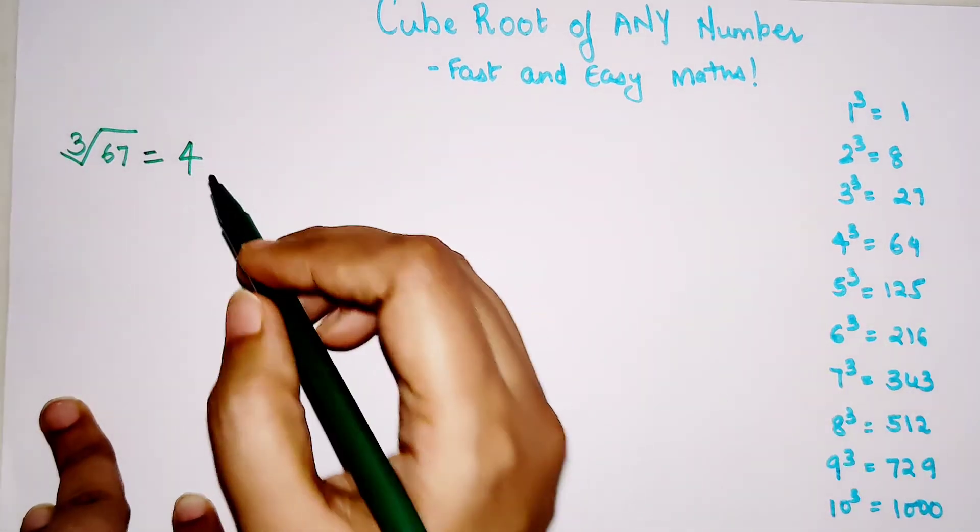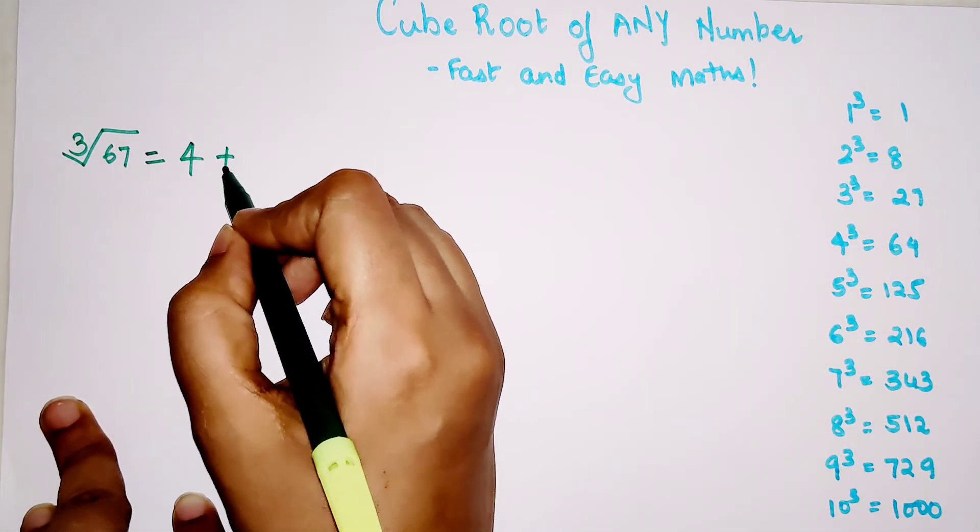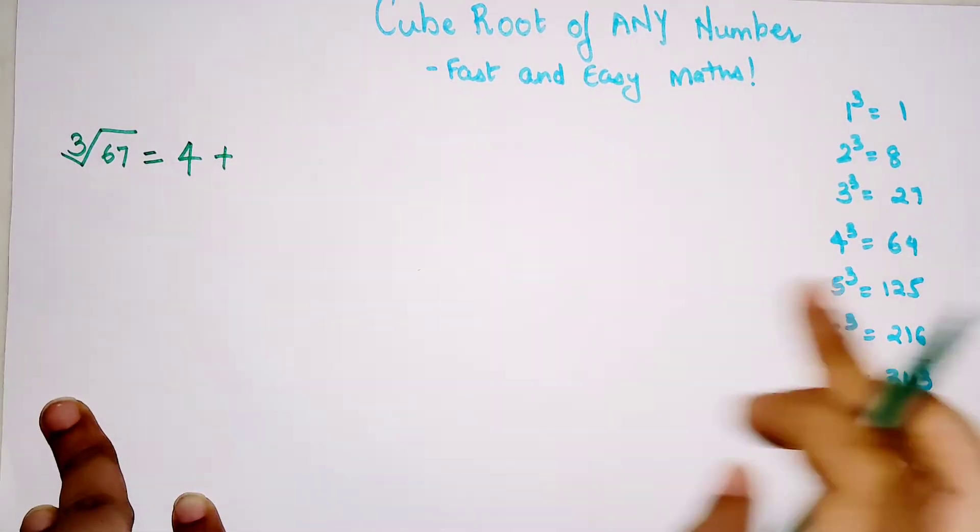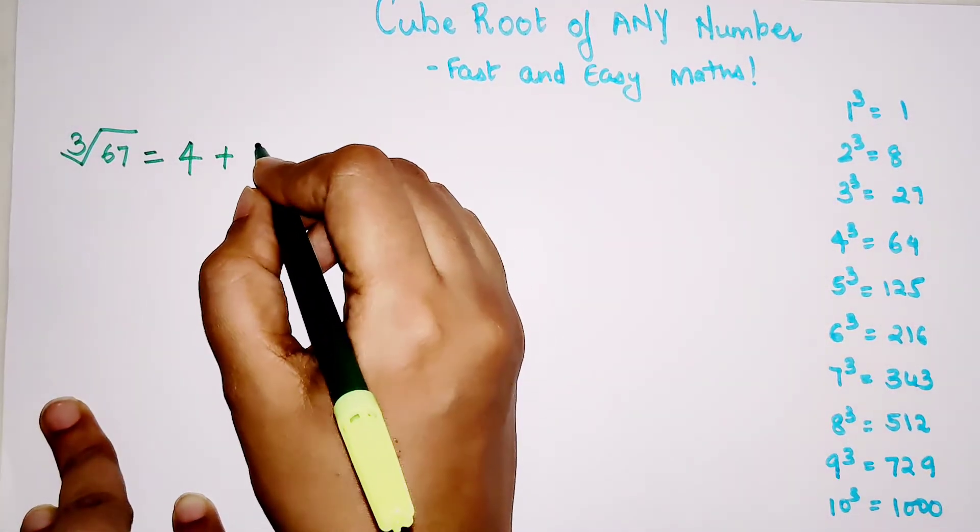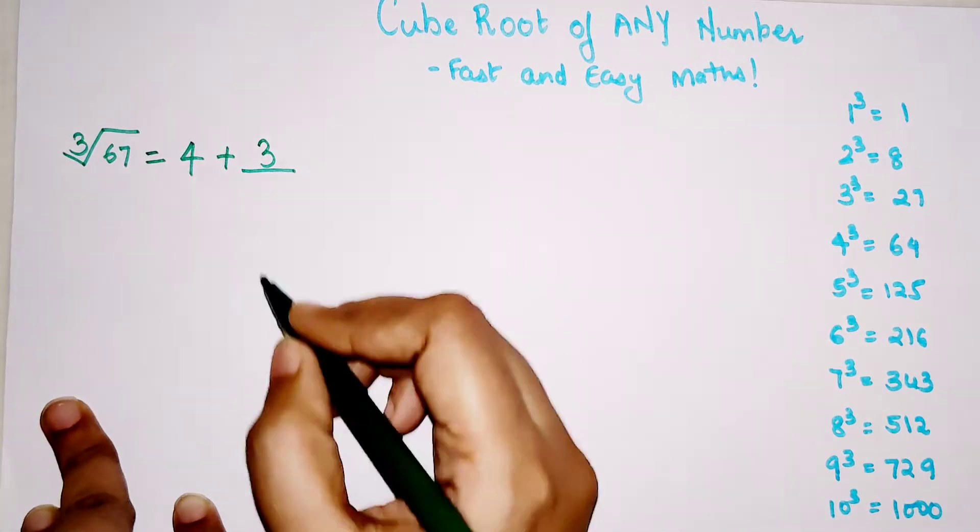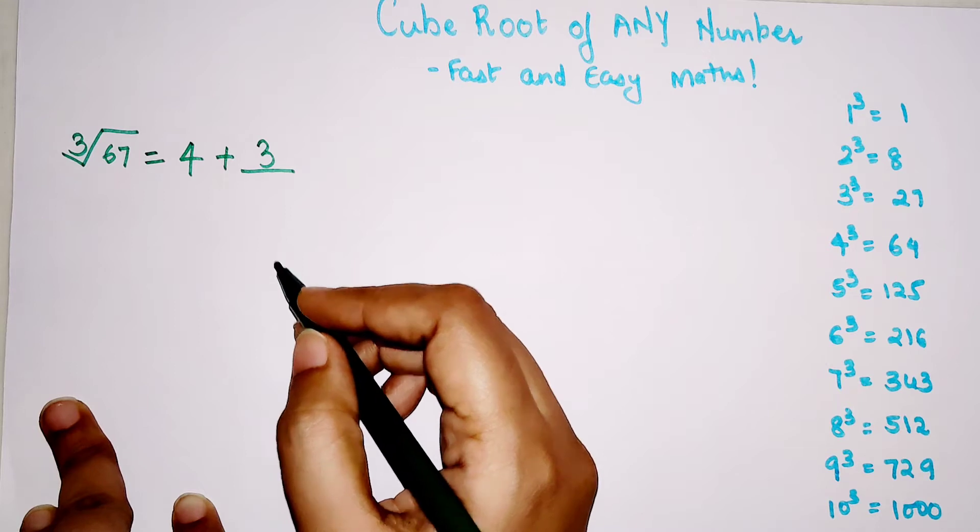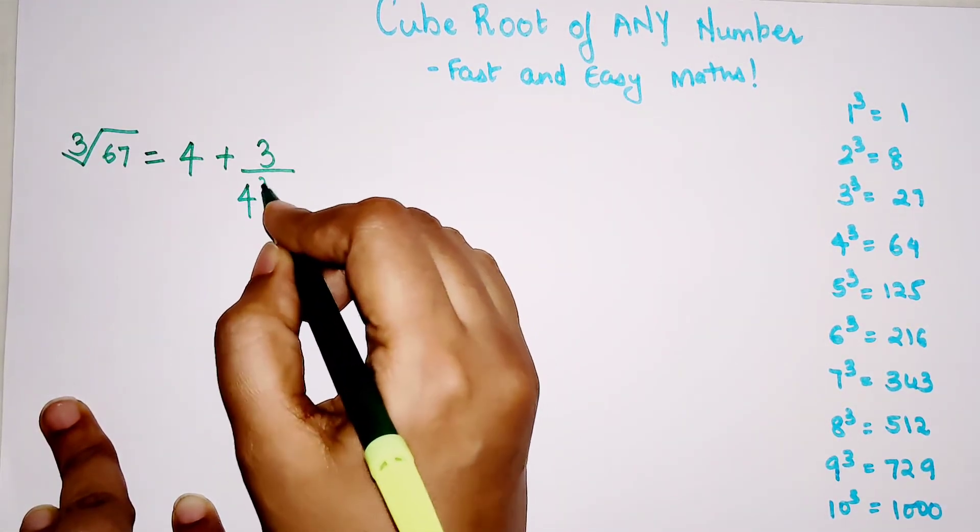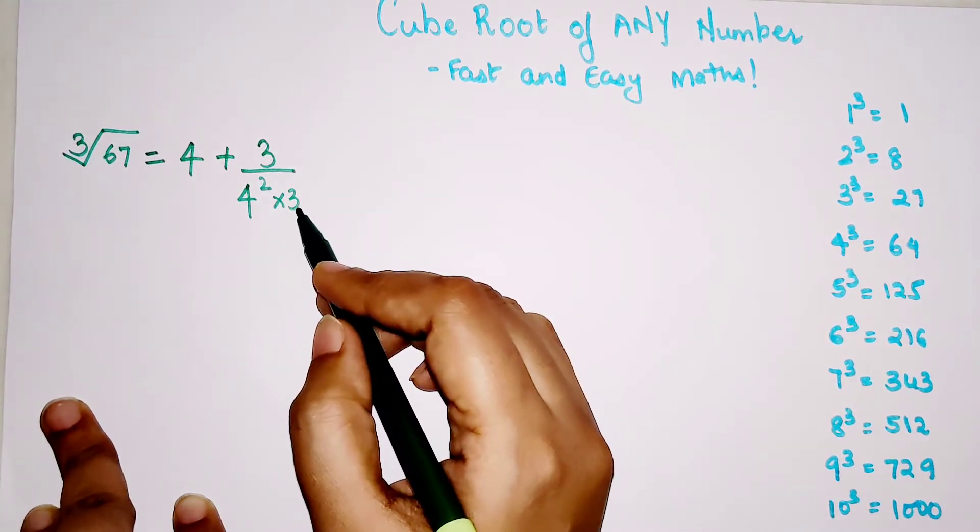Since 64 is 4 cubed, we're going to write down 4. The difference between 67 and 64 is 3, so you write 3 upon—next you divide by this number which is 4 squared and multiply by 3, since we are finding the cube root.